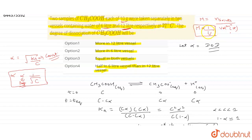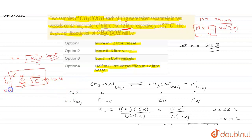In the 12 liter container, the concentration will be lower because molarity is inversely proportional to volume — higher volume means lower concentration. If concentration is lower, then alpha will be higher. So in the 12 liter container, concentration will be lower and alpha will be higher.